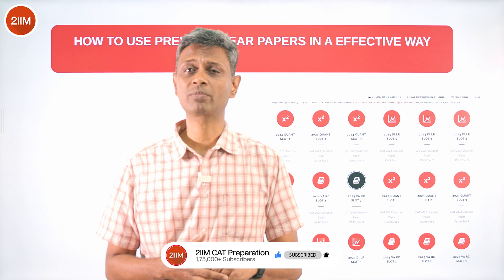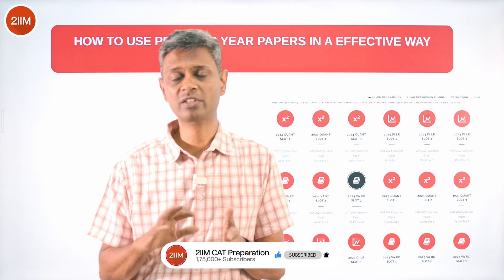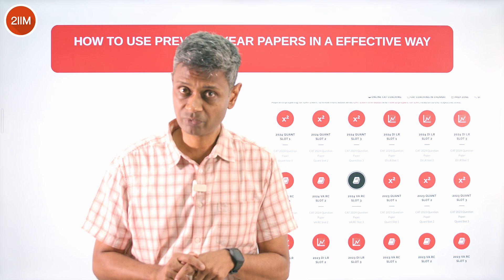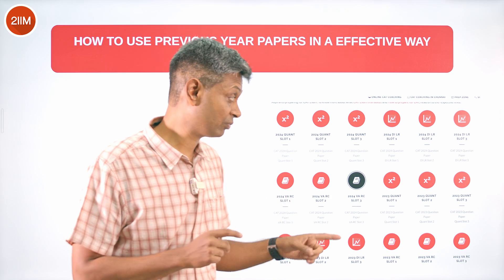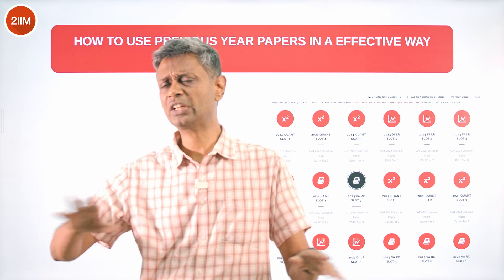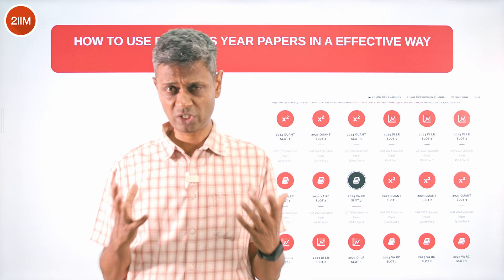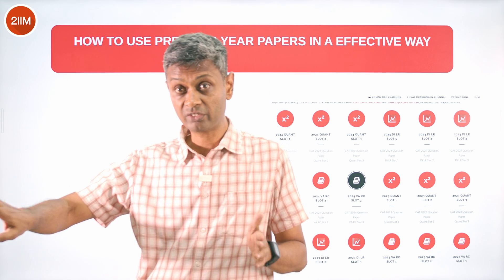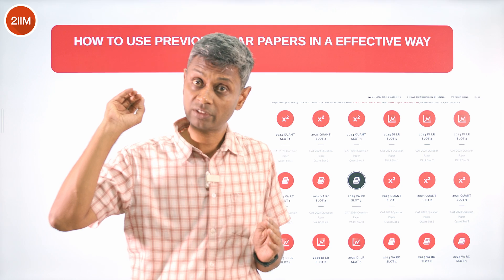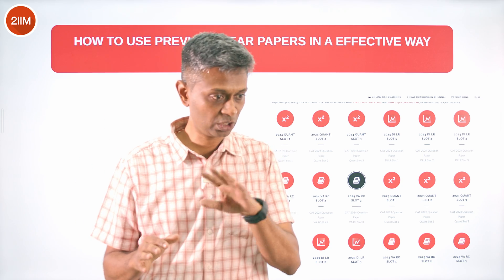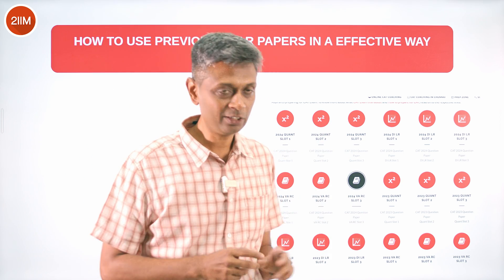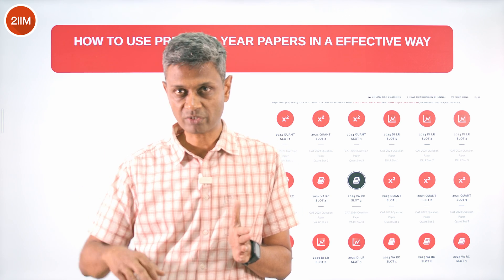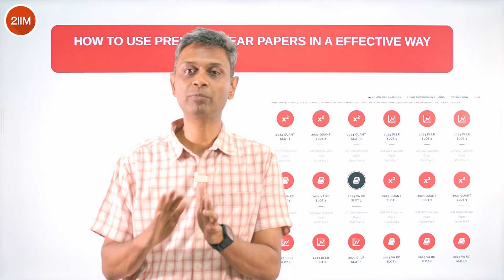Go slot by slot and take them as section tests or part tests. For LRDI especially, it doesn't even have to be a section test — the logical reasoning sets available here are fantastic and give you the best sense of CAT level. So the last two years (2024 and 2023) set aside for full mock exams; that's six papers. For the remaining nine, have a section test schedule: verbal separately, LRDI separately, quant separately.